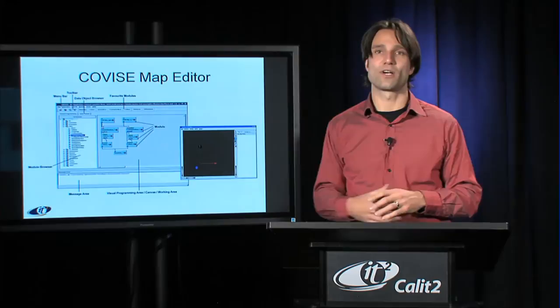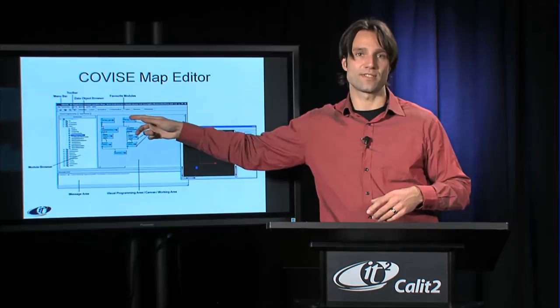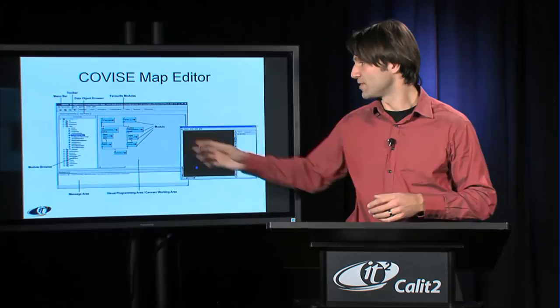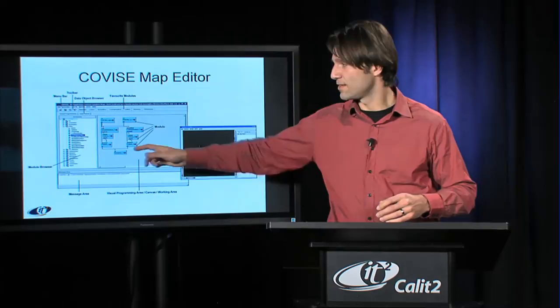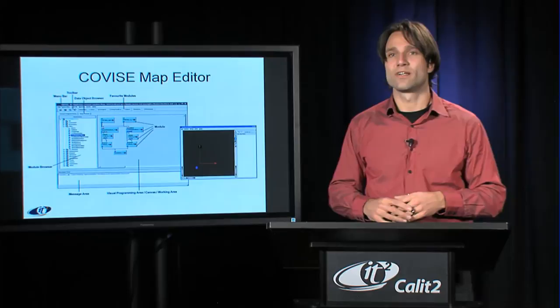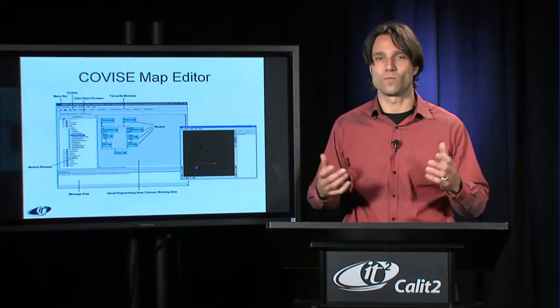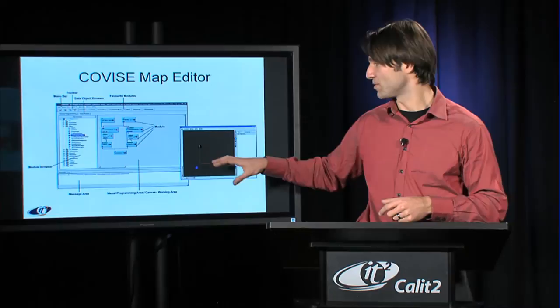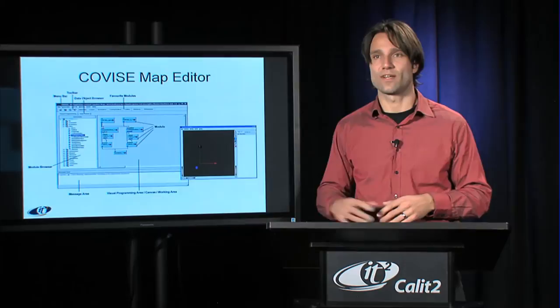In these module networks, you place I/O reader modules at the top, connect other modules downward to filter the data, and eventually feed the data into a visualization module. In this case the visualization module is called Renderer — that's our QT-based renderer. You can see the renderer in its own window: it's a 3D space visualized in a 2D window manager, with controls to scale, move, and rotate the dataset using mouse and icon buttons.